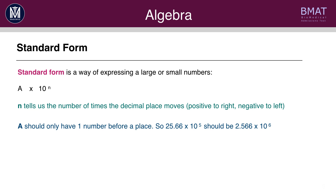a should only have one number before the decimal place. So if you have 25.66 times 10 to the 5, this is not standard form. It instead should say 2.566 times 10 to the 6. So therefore in effect a should always be less than 10.